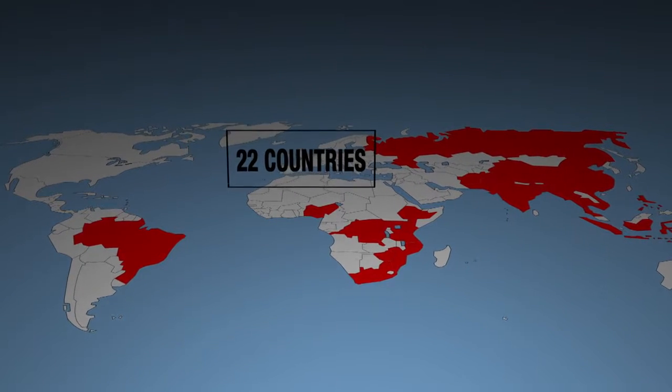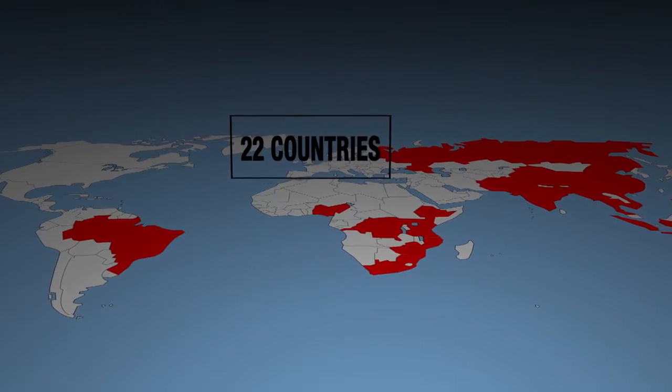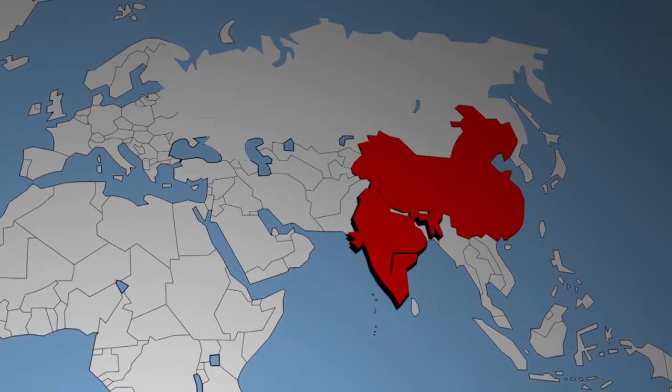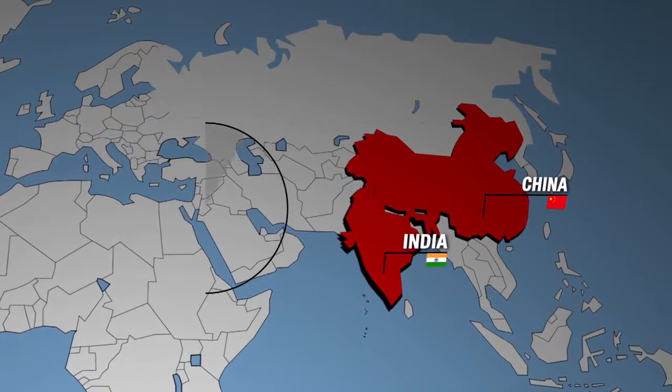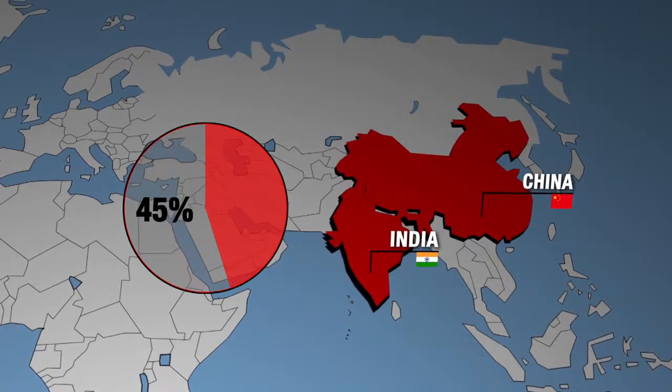The 22 worst affected countries are mostly in Africa and Asia. India and China together account for over 45% of the world's tuberculosis cases.